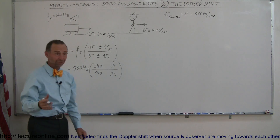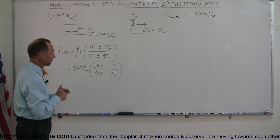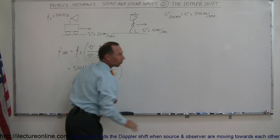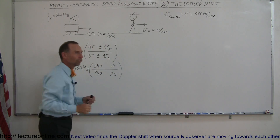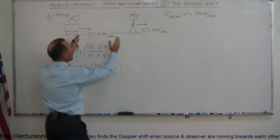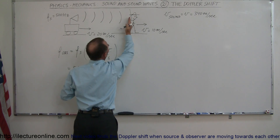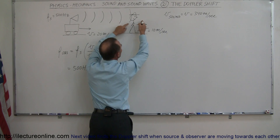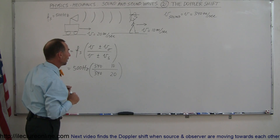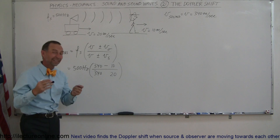It doesn't matter if they're moving to the left or to the right — we'll just plug in the number. However, the sign will be determined by what we expect to happen with the change in frequency. The observer is moving away from the source, so we would expect to hear a lower frequency. The waves take a little bit longer to reach the observer, so it appears as if the wavelengths are longer, meaning the frequency appears lower. A lower frequency means we need a negative in the numerator.